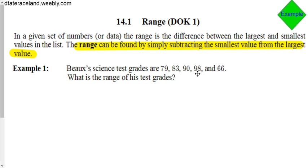So the largest number that we have here is a 98. Beaux's science test grade for that test was a 98. It's really good. And then his lowest score was a 66. We subtract the lowest score from the highest score, and you'll see that the range is 32.